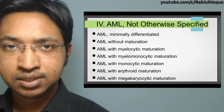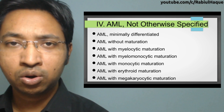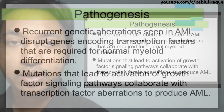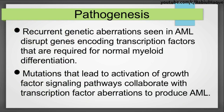Regarding pathogenesis: recurrent genetic aberrations in AML disrupt genes encoding transcription factors normally required for myeloid differentiation. When these aberrations occur, normal myeloid differentiation does not take place, resulting in accumulation of undifferentiated blast cells. Additionally, mutations that activate growth factor signaling pathways collaborate with transcription factor aberrations to produce acute myeloid leukemia.